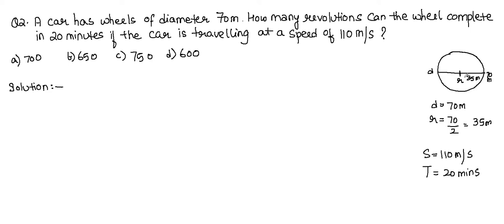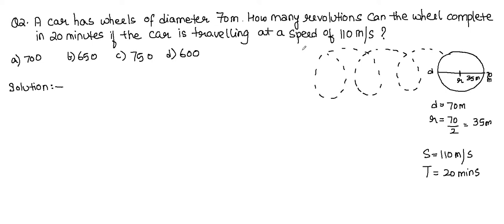A revolution is when the wheel rotates as the car moves. We need to find how many such revolutions the wheel makes in 20 minutes at a speed of 110 metres per second.